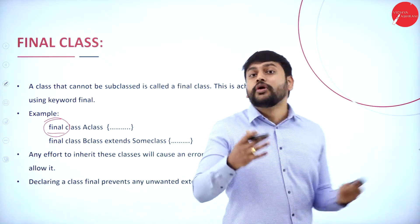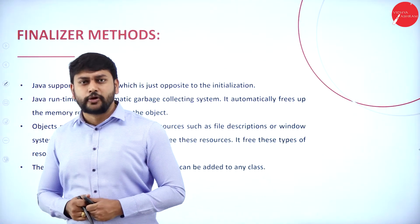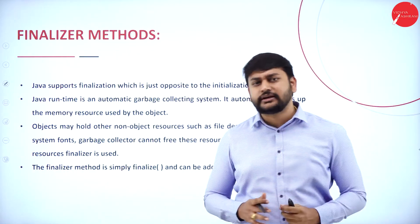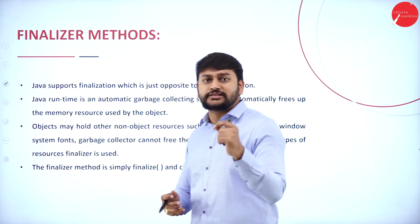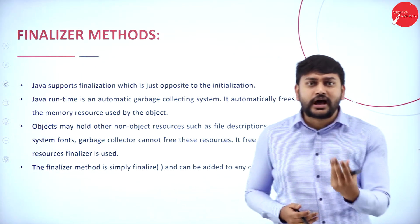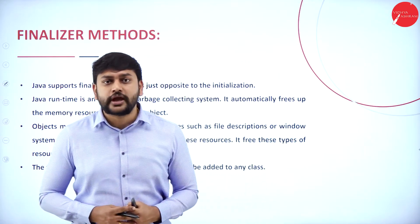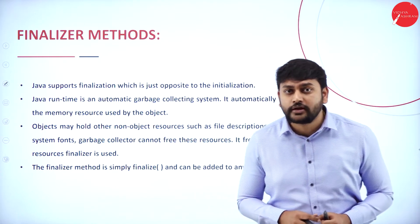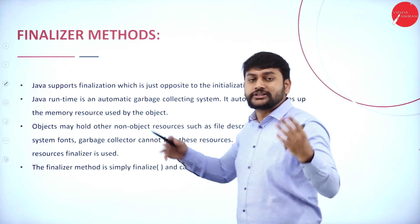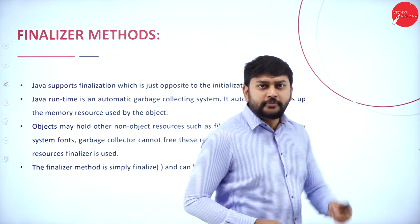Now let's look at finalizer methods. If I want to execute a class, I need resources — mainly memory. If I want to execute some class, I have to allocate memory for the object. After the execution of that particular object, I have to deallocate the memory or the resource that was allocated for that object.